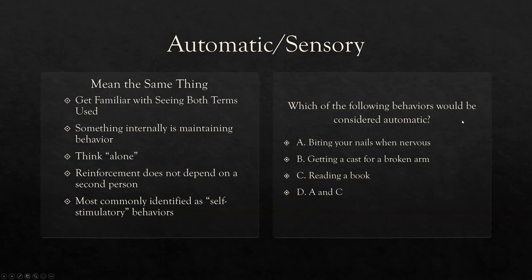Which of the following behaviors would be considered automatic? A — biting your nails when nervous. Yes, because think about the person alone biting their nails — it forms a habit because biting them is reinforcing. It's automatic, also known as sensory. B — getting a cast for a broken arm. Getting a cast is going to involve parents driving you, going to the doctor — it's a very social intervention. C — reading a book alone to yourself is going to be automatic; your reinforcement does not depend on a second person. The answer is both A and C.